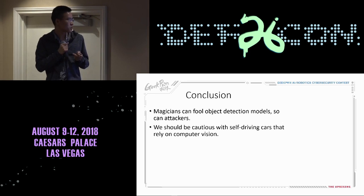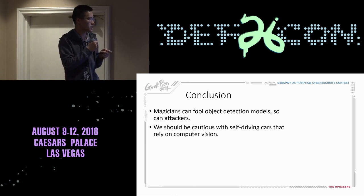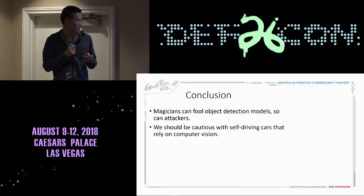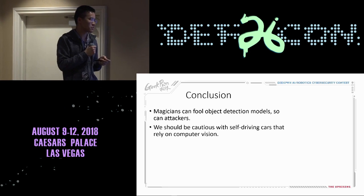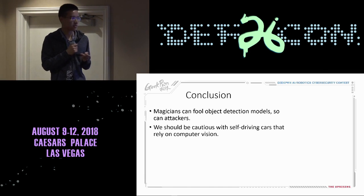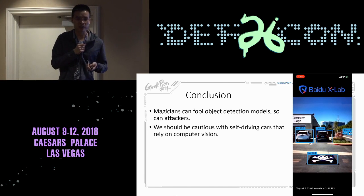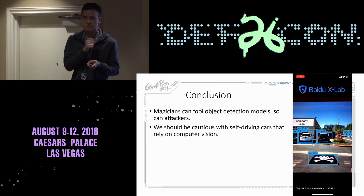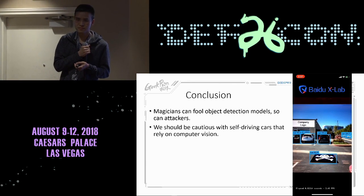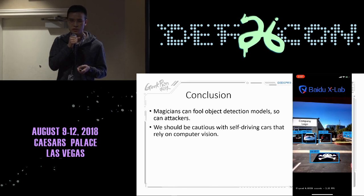Here comes the conclusion. We have shown that the adversarial patches can fool the object detection models, and so they can attack us. We should be very cautious with self-driving cars that rely on computer vision. Thank you for listening to my talk. I'll take any questions if you have them.